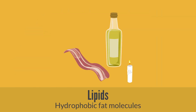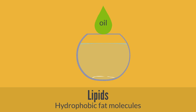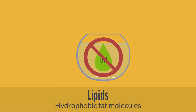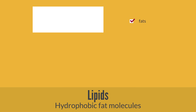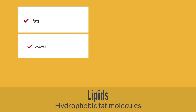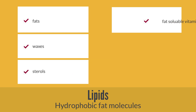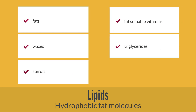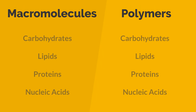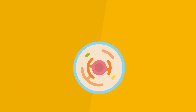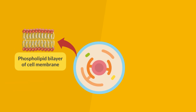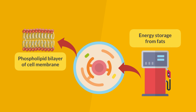Lipids, or fats, are organic substances that are insoluble in water. They include fats, waxes, sterols, fat-soluble vitamins, triglycerides, and phospholipids. Lipids are not true polymers, as they don't share a common monomer group. Lipids play a great role in cellular structure like cell membranes, and are the chief source of energy.